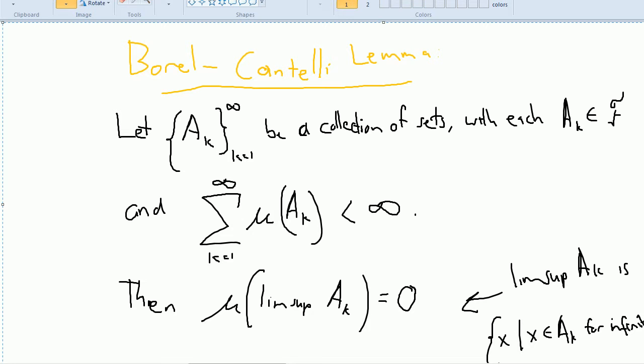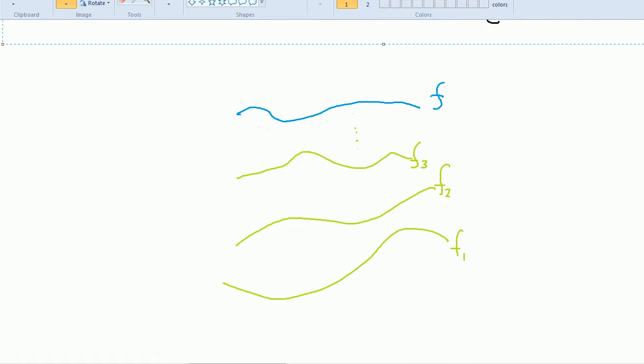Now this result can sometimes be useful for proving things like convergence, especially convergence almost everywhere. For example, if we have a sequence of functions and we're trying to show that the sequence of functions f sub n converges to a function f, well then if we can show that for each n there's some sort of epsilon that we can put around f, and we can give it this epsilon such that the measure, and we let A sub n be x such that the difference between f and f sub n is greater than whatever epsilon we've chosen.